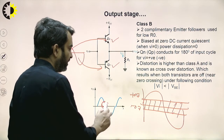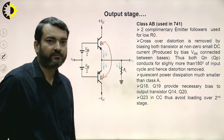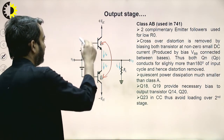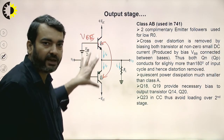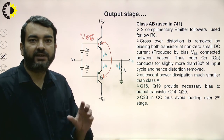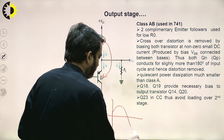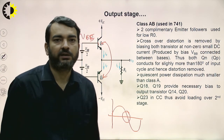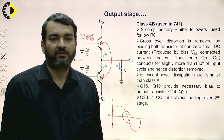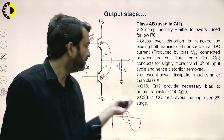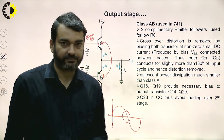In class AB, this crossover distortion is removed. With a complementary set of transistors QN and QP, a total bias voltage VBB is applied to ensure that both transistors are in the on state when the input voltage remains in the range of +0.7V to -0.7V, so there is no crossover distortion in the output. In the next class, we will see DC analysis and AC analysis of the 741 IC. Thank you.